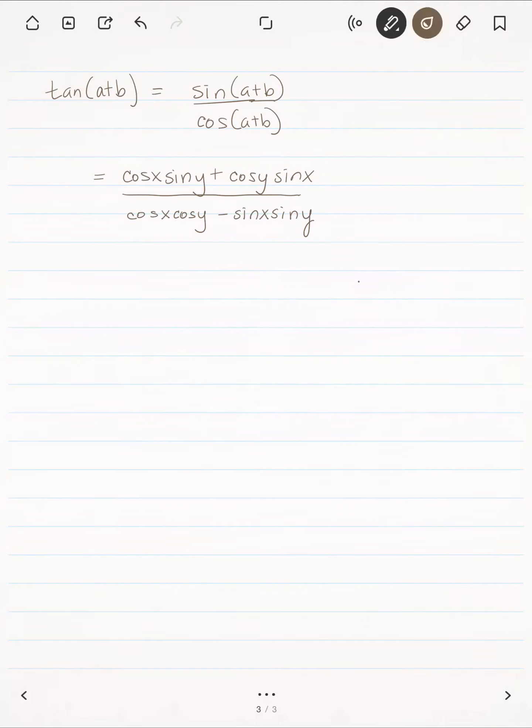I'm going to do some strange manipulation. I'm going to multiply by the value of 1, but a specific 1: 1 over the cosine of x times the cosine of y over the same value.